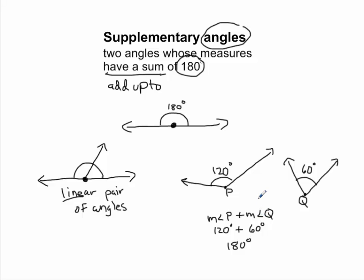To review: if they ask you whether a pair of angles is supplementary, they have to meet this condition — they have to have a sum of 180 degrees. If they do not add up to 180 degrees, then you can conclude that the pair of angles you are looking at are not supplementary.